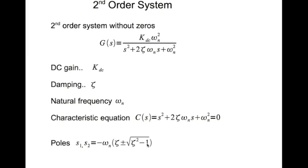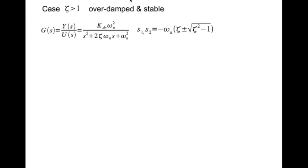We'll have different behaviors depending on the value of zeta. The case where ζ > 1 is the over-damped but stable case. Looking at the poles, s1 and s2 equal minus ω_n times (ζ ± √(ζ²−1)). When ζ > 1 the term √(ζ²−1) is real, and since ζ is always greater than or equal to √(ζ²−1), this is a positive number. Effectively both roots are distinct and negative.